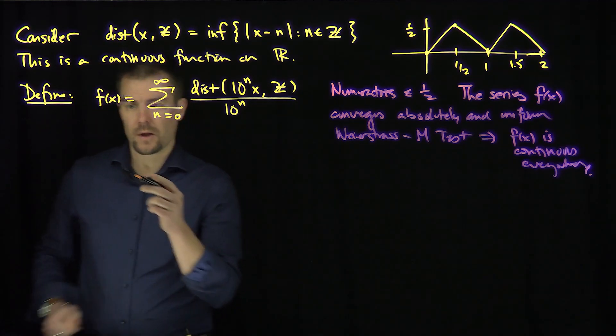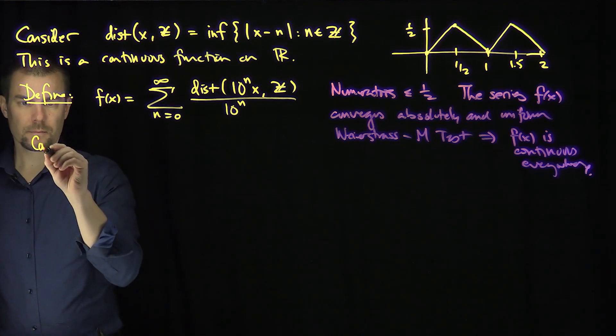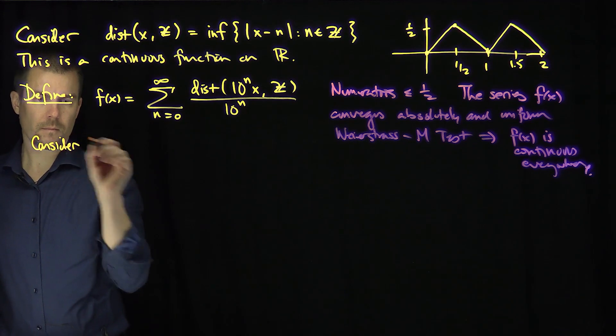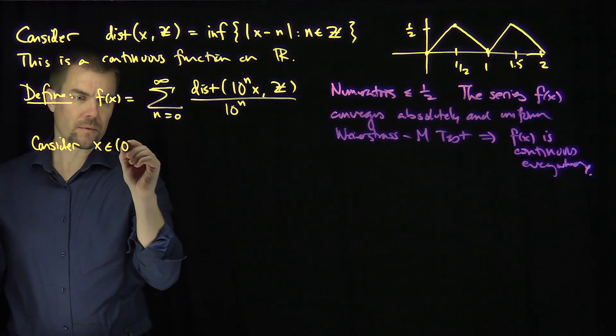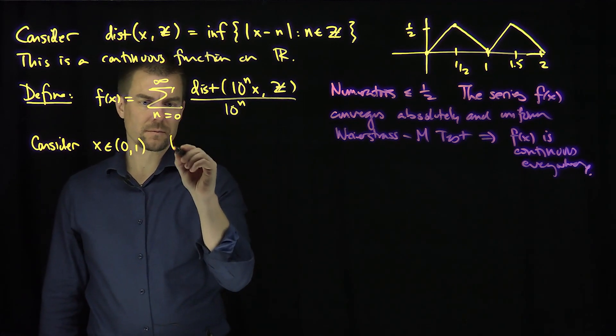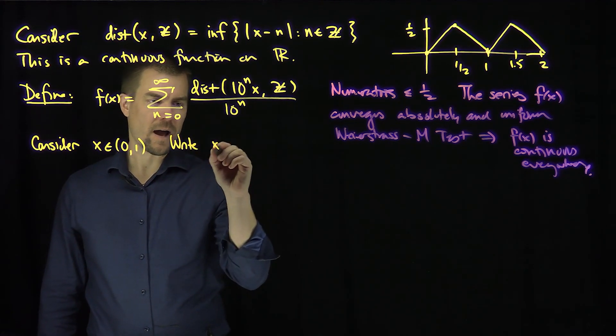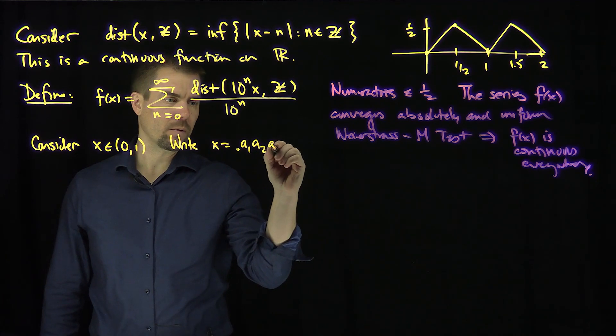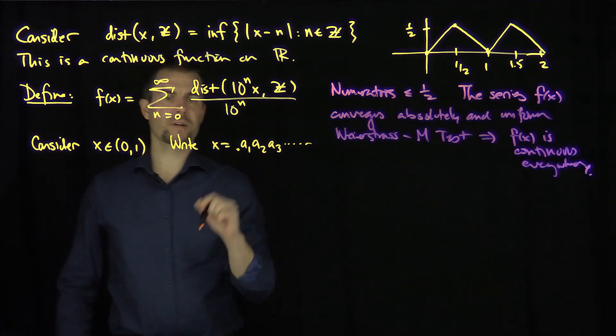Now what I'm going to do is the following. Let's consider x in the interval (0,1). And what we can do is we can write x as 0.a1, a2, a3, etc.